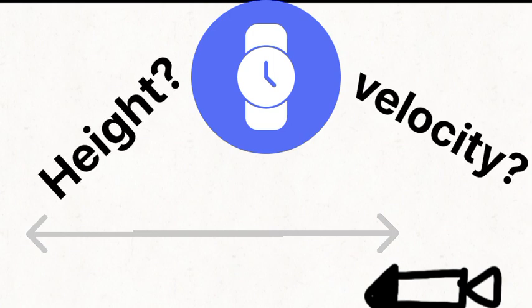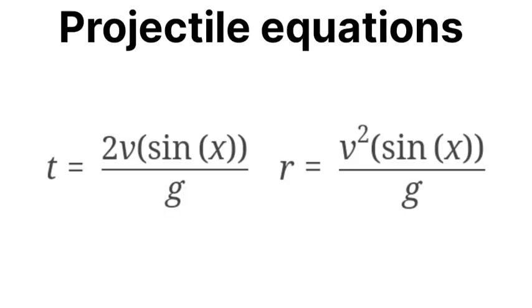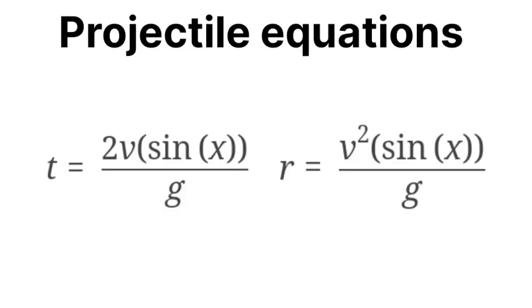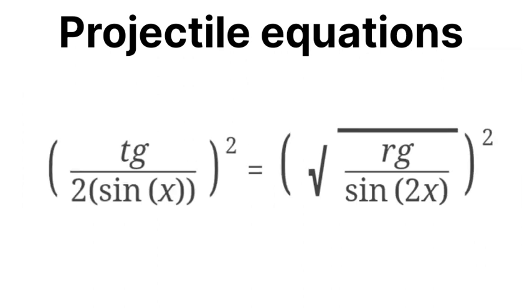First, we use projectile equations for time and range. We rearrange them to equate on the basis of velocity, then we square both sides.